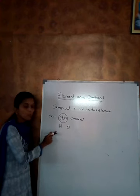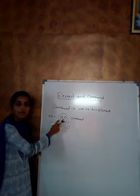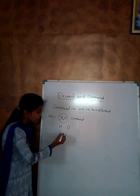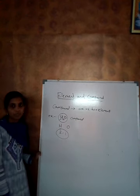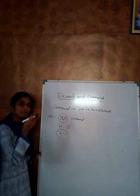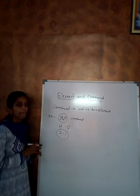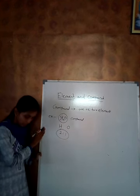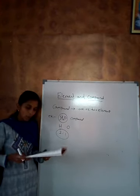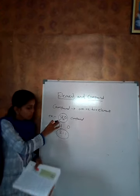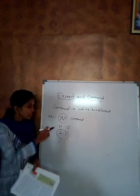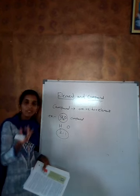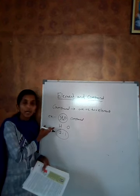Their fixed proportion means: hydrogen — two atoms; oxygen — one atom. Their proportion is fixed. That is why this compound is a pure substance that contains two or more elements combined together chemically in a fixed proportion. The properties of compounds are completely different from the elements. Hydrogen burns when in contact with air, and oxygen is necessary for burning, but water neither burns nor supports burning. Their properties are almost entirely different.